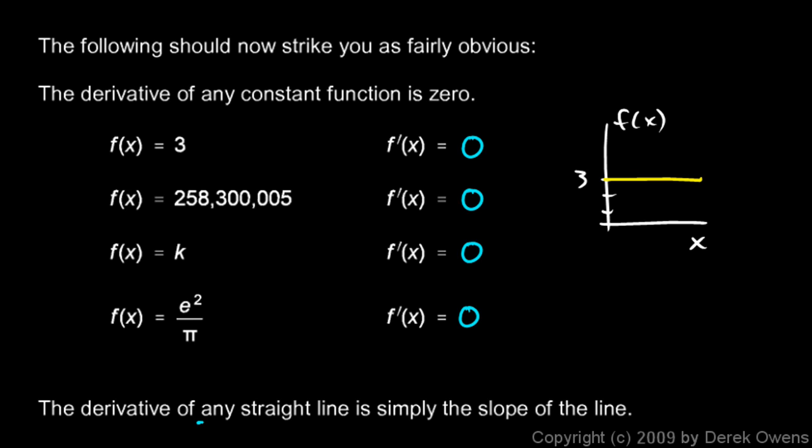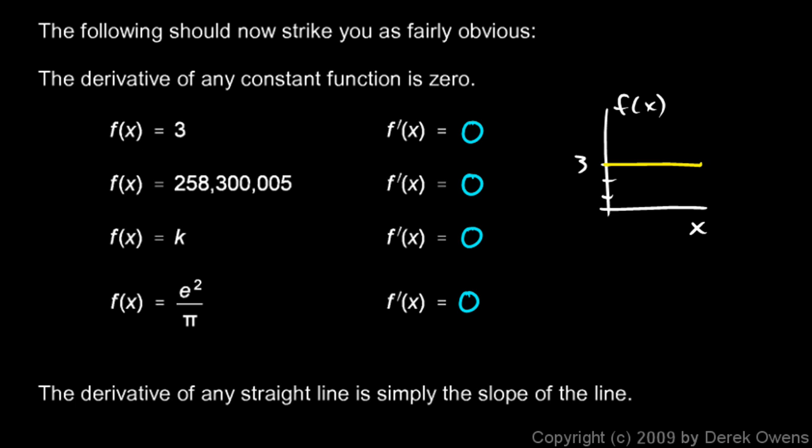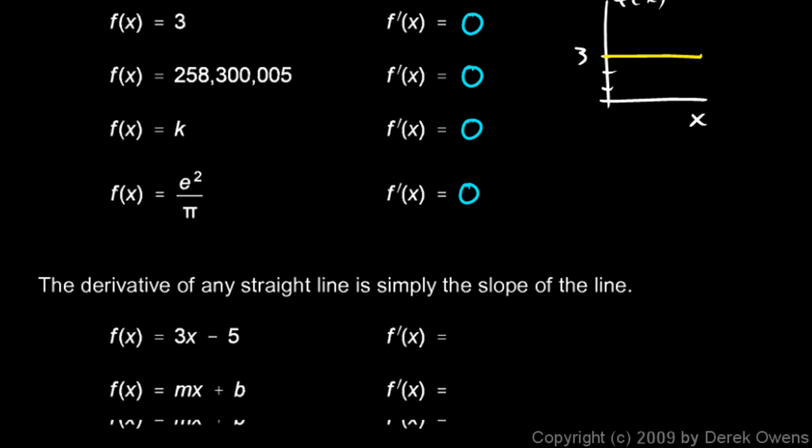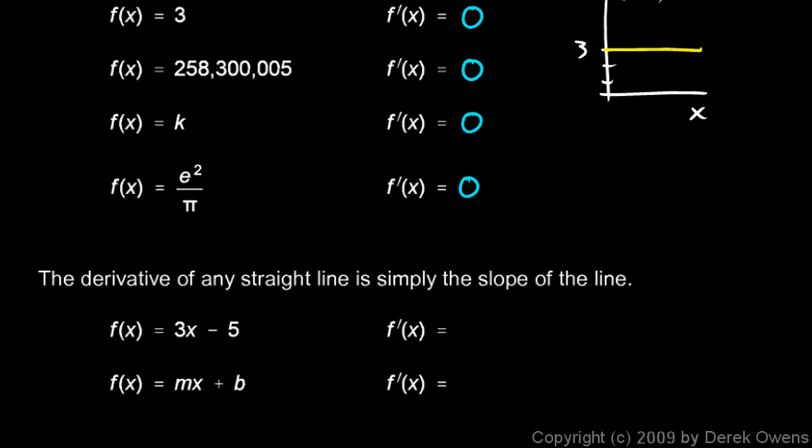And then down here, let's just think about any straight line. The derivative of any straight line is simply the slope of the line. So if we have f of x equals 3x minus 5, the derivative there would simply be 3.